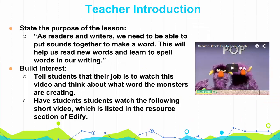Introduce the lesson by setting the purpose and engaging students. For example, begin with: 'As readers and writers, we need to be able to put sounds together to make a word. This will help us read new words and learn to spell words in our writing.' Then pull students into the lesson by building interest. A great way to do this is with a fun video or song. The video on this page is a short video demonstrating the idea of onset and rhyme.